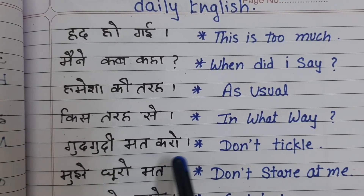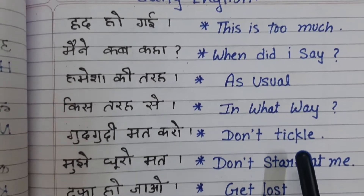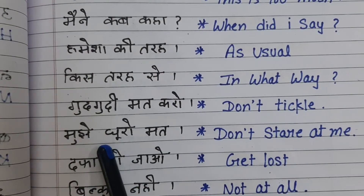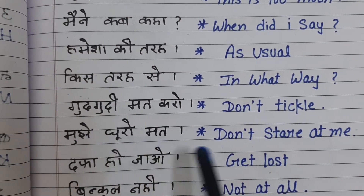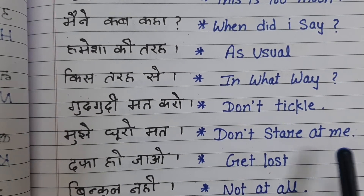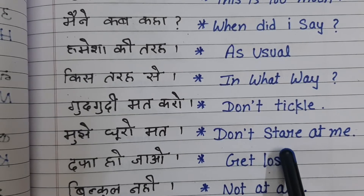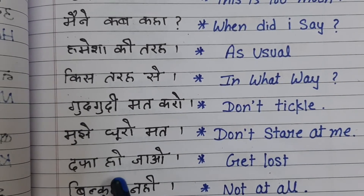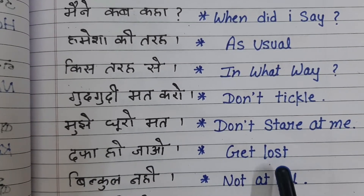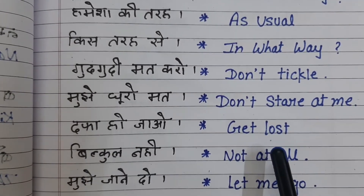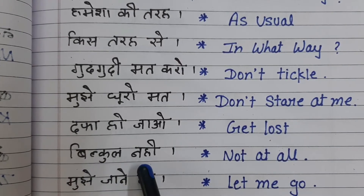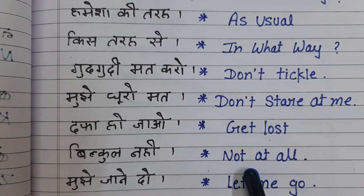गुद्गुदी मत करो — don't tickle. मुझे घूरो मत — don't stare at me. दफा हो जाओ — get lost. बिल्कुल नहीं — not at all.